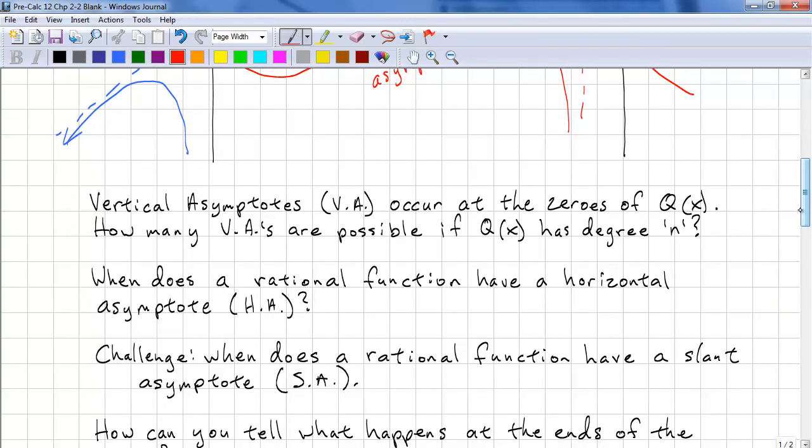What you want to think about while doing this lab is vertical asymptotes occur at the zeros of q(x). How many vertical asymptotes are possible if q(x) has degree n?